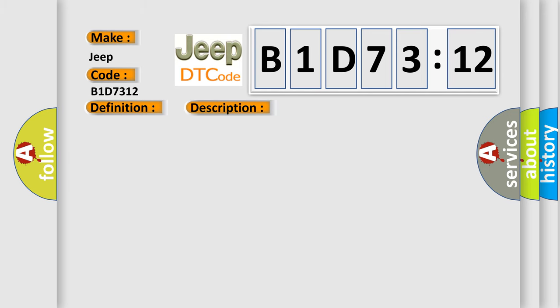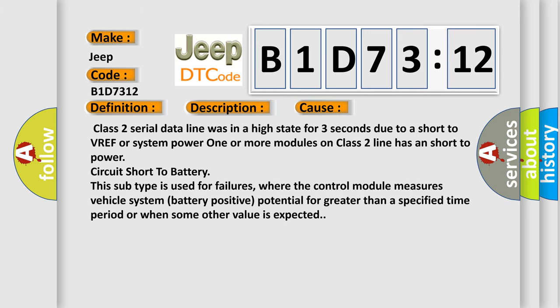This diagnostic error occurs most often in these cases: Class 2 serial data line was in a high state for three seconds due to a short to VREF or system power. One or more modules on Class 2 line has a short to power. Circuit short to battery. This subtype is used for failures where the control module measures vehicle system battery positive potential for greater than a specified time period or when some other value is expected.